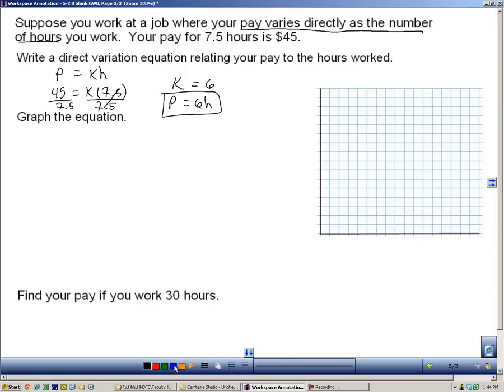Because it's a direct variation, we know it's going to go through the origin. And now I need to set up my units for my independent value, which is the hours, and my dependent value, which is the pay.